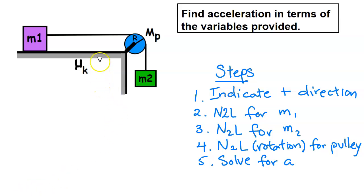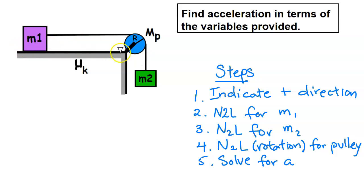In this video we're going to look at a modified Atwood's machine where the pulley has mass. Oftentimes when you see this problem the pulley does not have mass, but in this problem it does. A modified Atwood's machine is a setup where you have one mass on the table, a pulley, and a rope that goes through the pulley and down to another mass that's hanging freely.